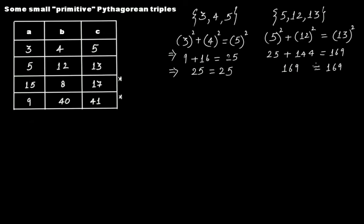Now you'll ask: what are primitive Pythagorean triples? If you look at these four sets of Pythagorean triples, you will find that their highest common factor — or greatest common divisor — is equal to 1. The highest common factor being equal to 1 is what makes them primitive Pythagorean triples.